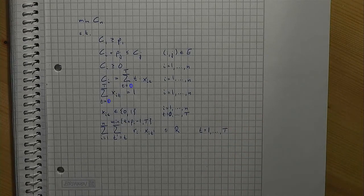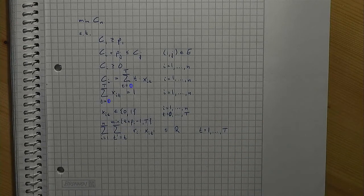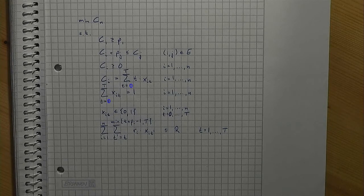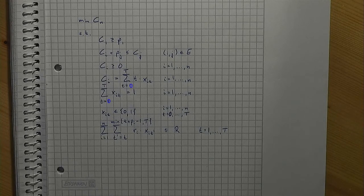Note that this formulation is still linear. If you try to add capacity constraints to our linear program using the c-variables, you'll notice that this won't work unless you give up the property of being a linear program.